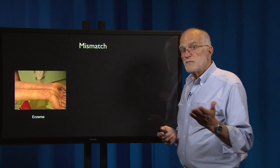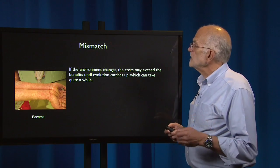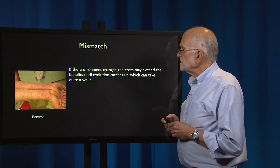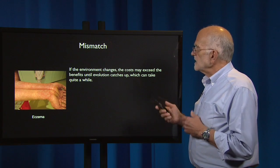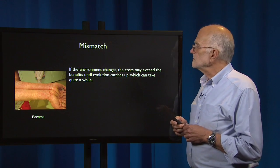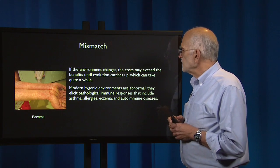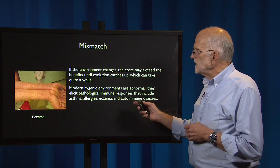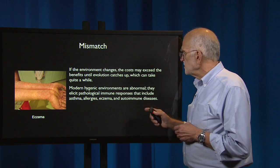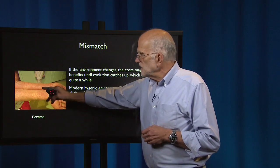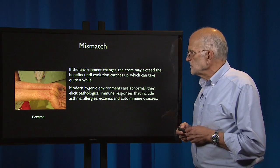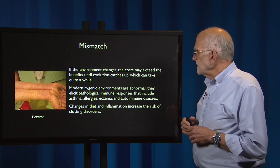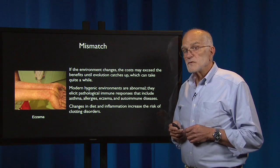Mismatch is also an important concept. If the environment changes, the cost may exceed the benefits until evolution catches up, and that can take quite a while. Modern hygienic environments are abnormal — they elicit pathological immune responses that include asthma, allergies, eczema, and autoimmune diseases. Here is an example of eczema on the forearms of a patient. Changes in diet and in inflammation also increase the risk of clotting disorders.